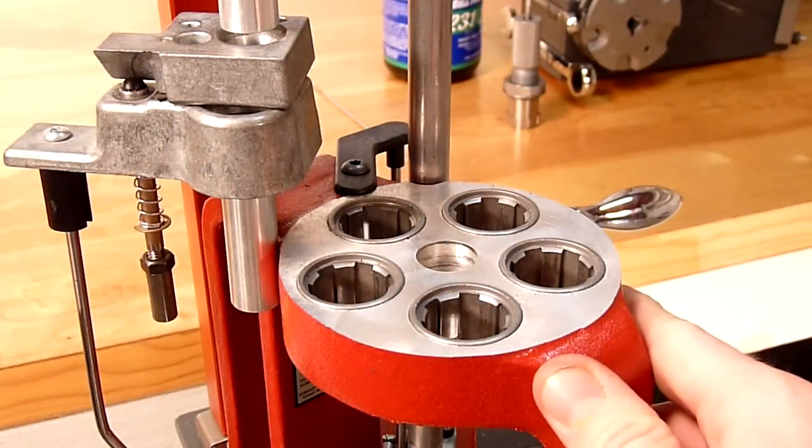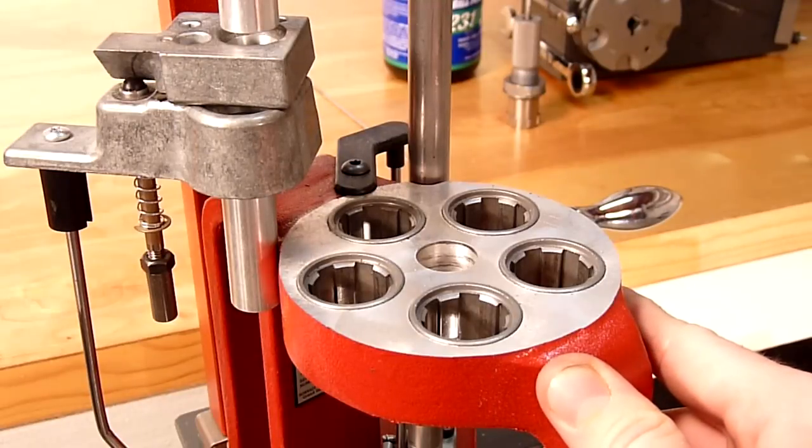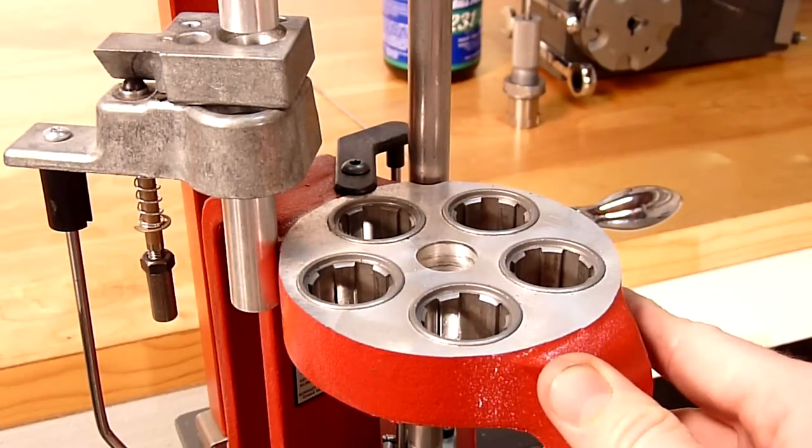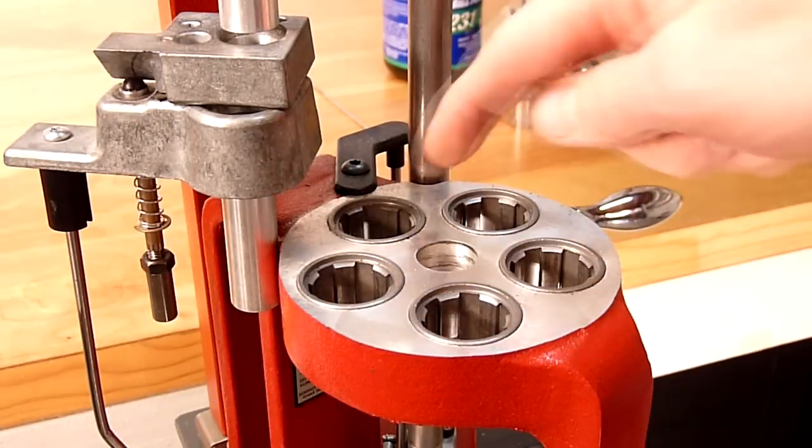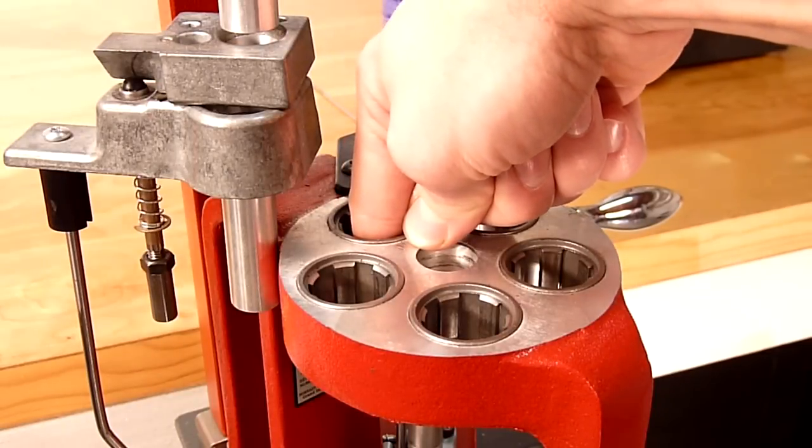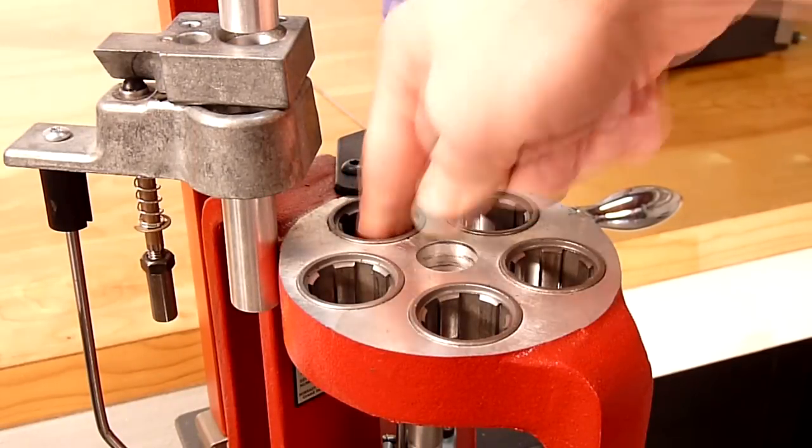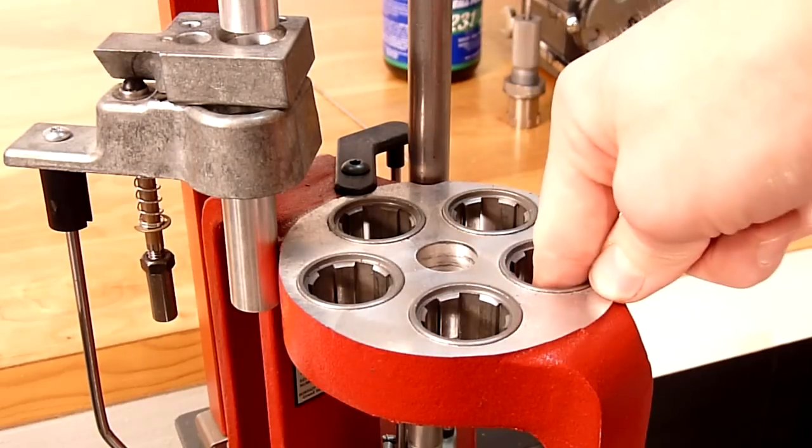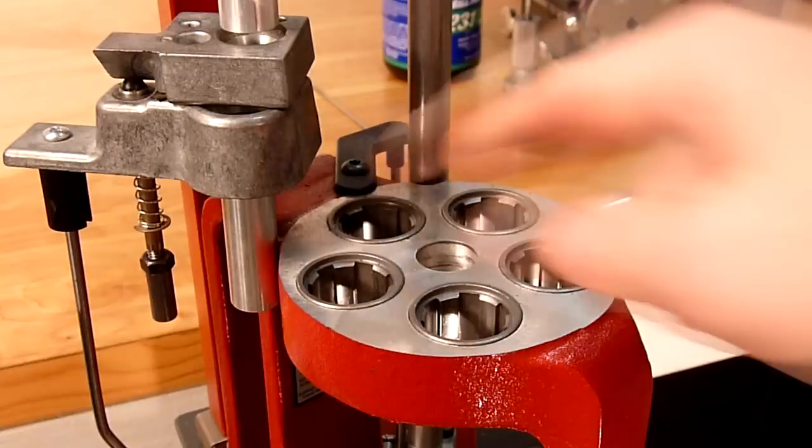On the Hornady AP, it has 5 stations, and the stations are numbered as such. Station number 1 comes immediately following case insertion. Station number 2, station number 3, station number 4, and station number 5.